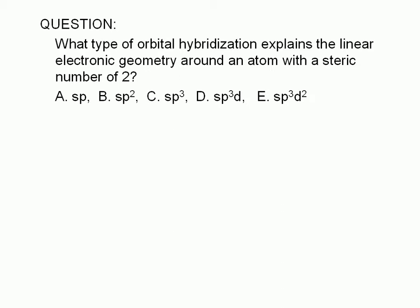What type of orbital hybridization explains the linear electronic geometry around an atom with a steric number of 2? A. SP, B. SP2, C. SP3, D. SP3D, or E. SP3D2.